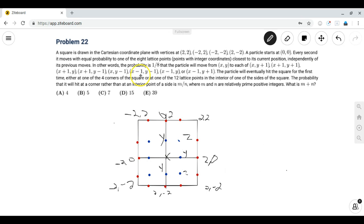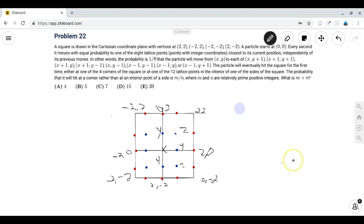In other words, the probability is one-eighth that the particle will move from (x,y) right, down, left, up, or right and up, or right down, left down, left up with probability one-eighth. Eventually the particle will hit the square for the first time either at one of the four corners or on one of the red dots which are the lattice points on the sides of the square. The probability that it will hit a corner rather than at an interior point of a side is m over n, and we just want to compute the probability and sum the numerator and denominator. So how do you go about doing this?